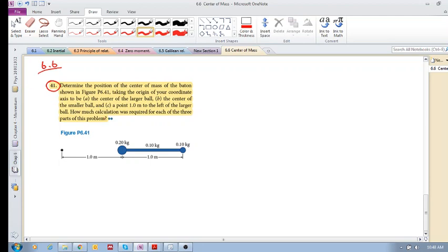I've been doing this in the ADU classes, so some of you might be familiar with it. It says, determine the position of the center of mass of the baton shown in the figure, taking the origin of your coordinate axis three different origins. The center of the larger ball, the center of the smaller ball, and a 0.1 meter to the left.